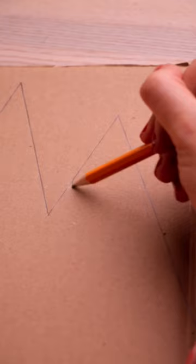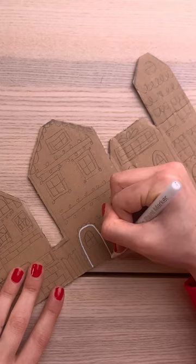I'm making taller mountains for a background. Cut them and you're ready to start with a paint pen. Trace over every line you've drawn. The white lines will really stand out on the cardboard, like icing.